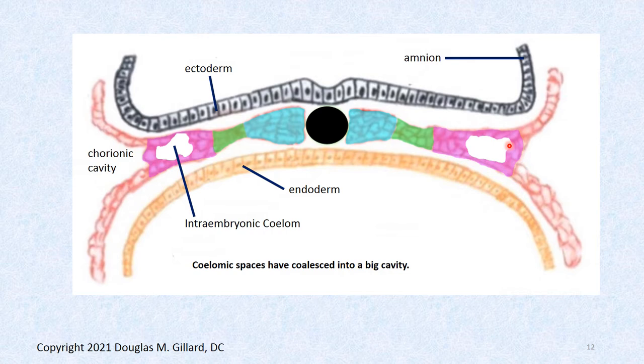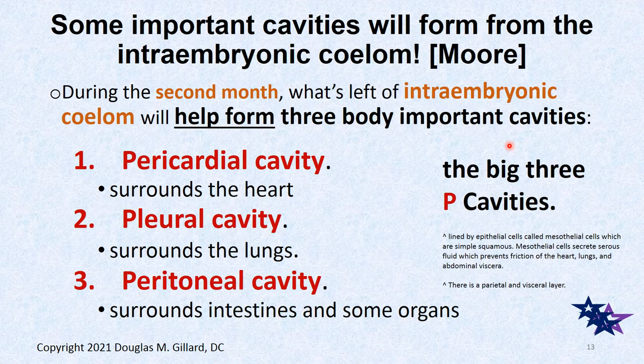Now we have a nice intraembryonic coelom going on. This is very important — about the second month, what's left of this embryonic coelom will fold and create three very important cavities: the pericardial cavity, which surrounds the heart and sits between the parietal and visceral layers; the pleural cavity, which surrounds the lungs; and the peritoneal cavity, which surrounds the intestines and organs — basically your belly where all your intestines are. We'll get to that in depth in fifth quarter.